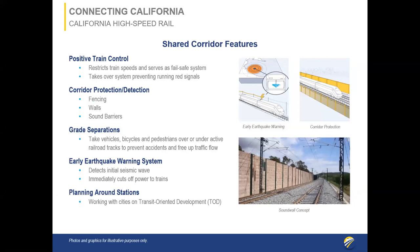The corridor goes mostly along the existing train corridor shared by Metrolink, Amtrak, and UPRR. Along the shared corridor, some features will include positive train control, which restricts train speeds and serves as a fail-safe system preventing running red signals; corridor protection and detection including fencing, walls, and sound barriers; grade separations which take vehicles, bicycles, and pedestrians over or under active railroad tracks; an early earthquake warning system which detects the initial seismic wave and immediately cuts off power to trains; and planning around stations for transit-oriented development.